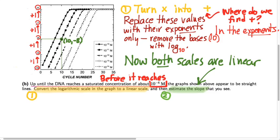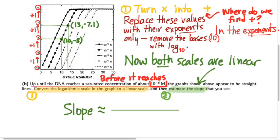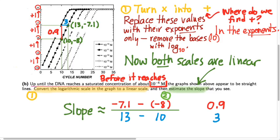To estimate a slope, all we need to do is pick two points. Since all the different lines on the graph have roughly the same slope, it doesn't matter which line we pick as long as we're consistent. If I estimate the coordinates of one point to be about (10, −8) and another to be (13, −7.1), then subtracting the y-coordinates gives about 0.9, and subtracting the x-coordinates gives 3. Dividing the former by the latter gives 0.3, which is the slope of the line on this graph.